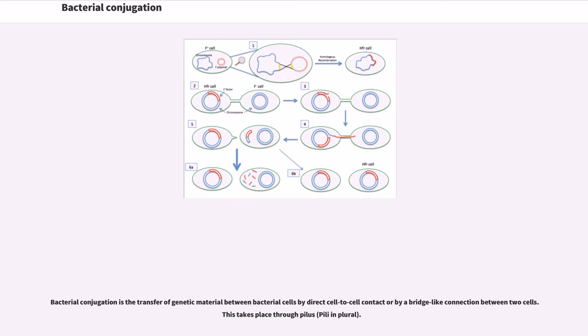Bacterial conjugation is the transfer of genetic material between bacterial cells by direct cell-to-cell contact or by a bridge-like connection between two cells. This takes place through pilus, or pili in plural.